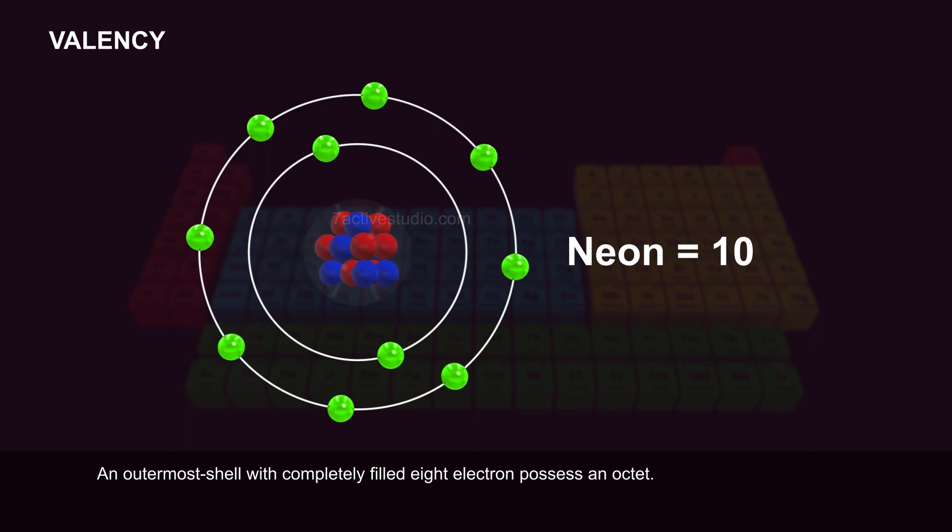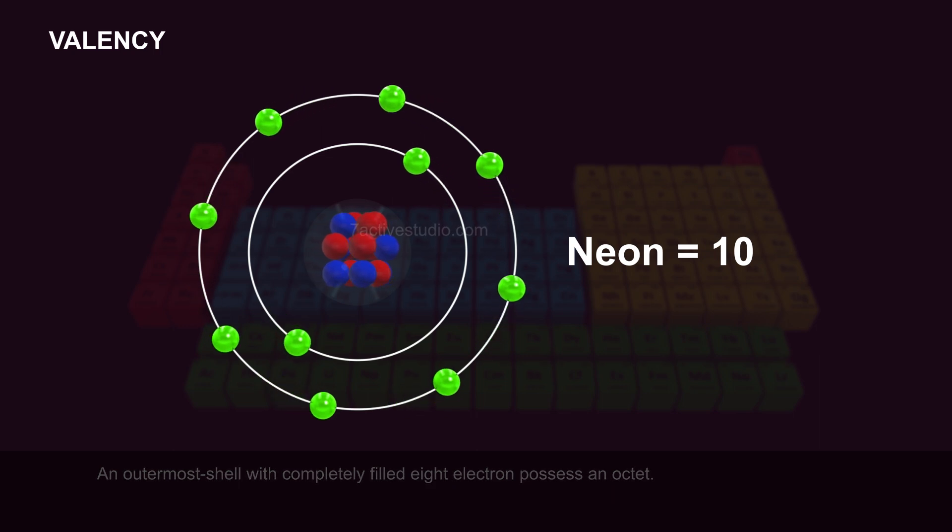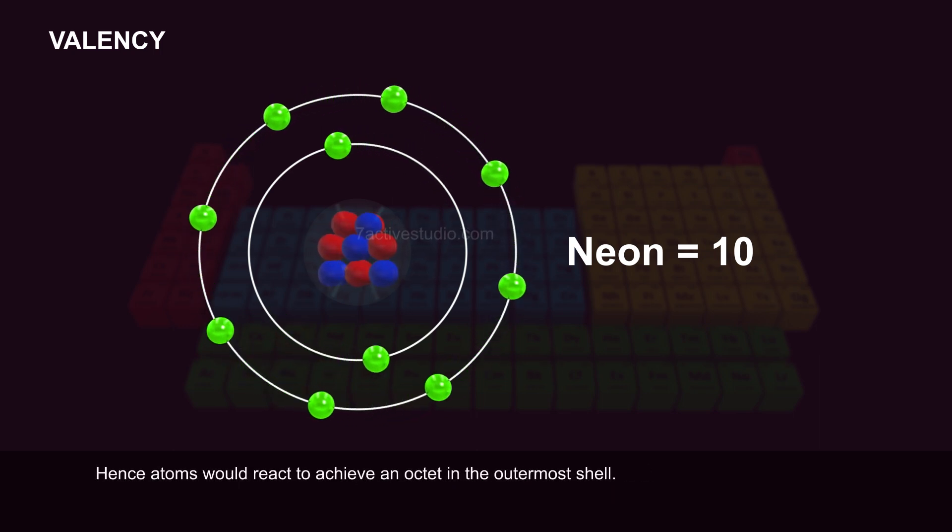An outermost shell with completely filled 8 electrons poses an octet. Hence, atoms would react to achieve an octet in the outermost shell.